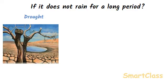Due to lack of rains, the water levels in lakes and ponds also go down and some of them even completely dry up. The underground water levels also fall drastically. Thus, no rains for a prolonged period may cause drought.